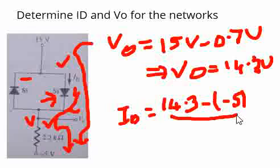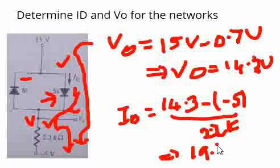14.3 plus 5, which is 19.3 by 2.2k. If you do the calculation here, 19.3 divided by 2.2, this gives 8.7 milliamps.